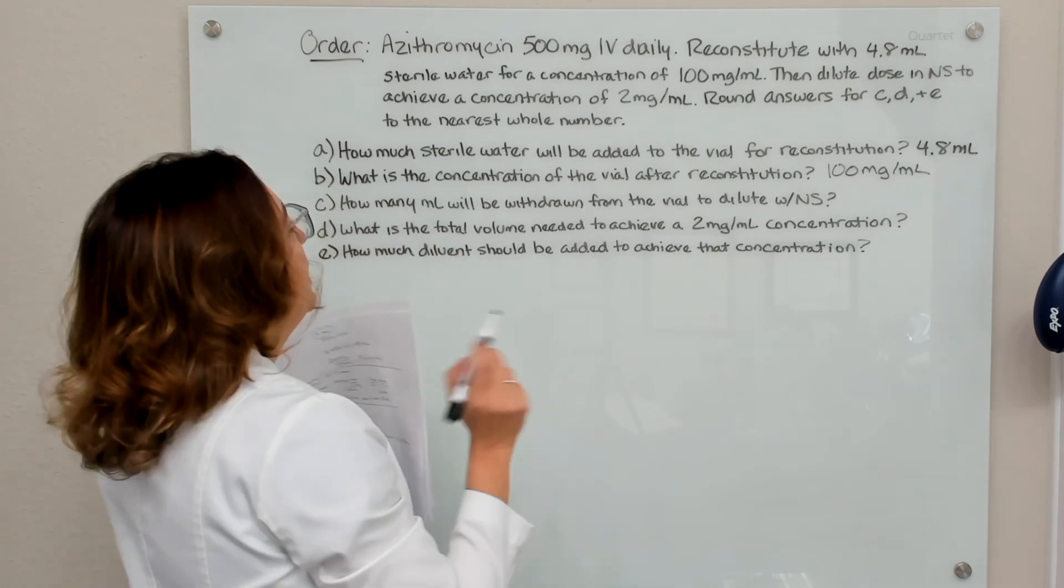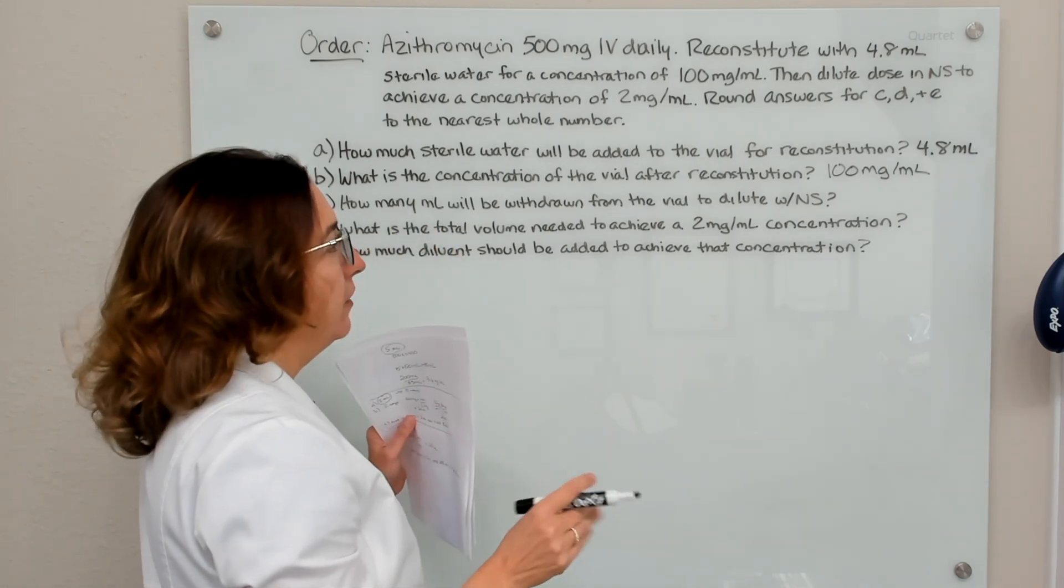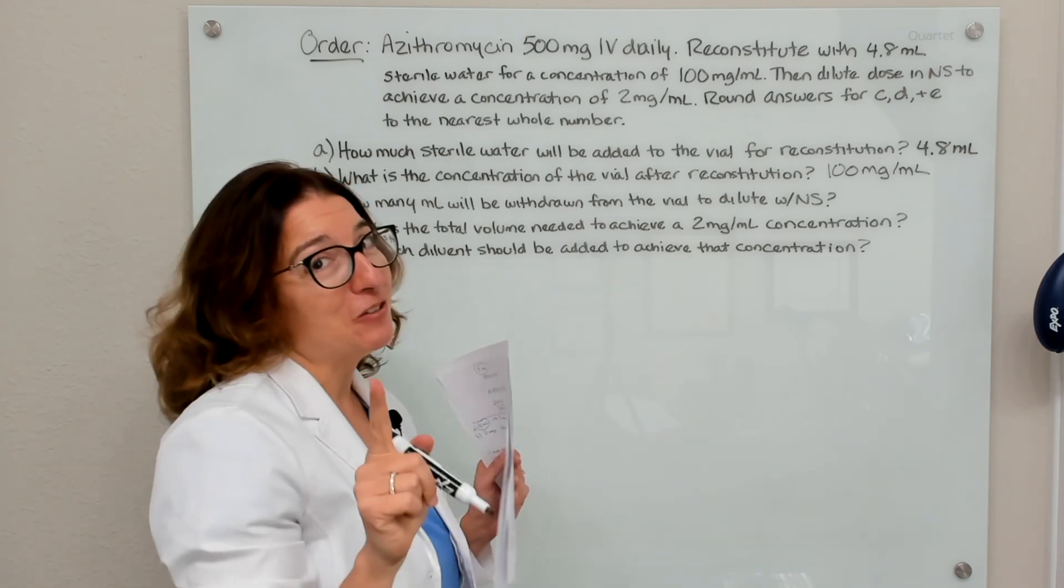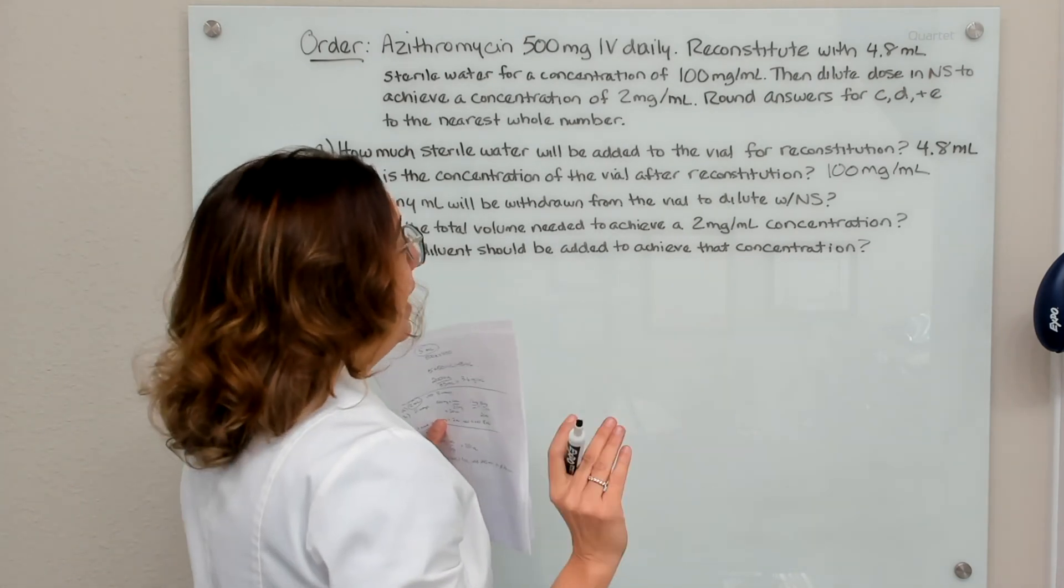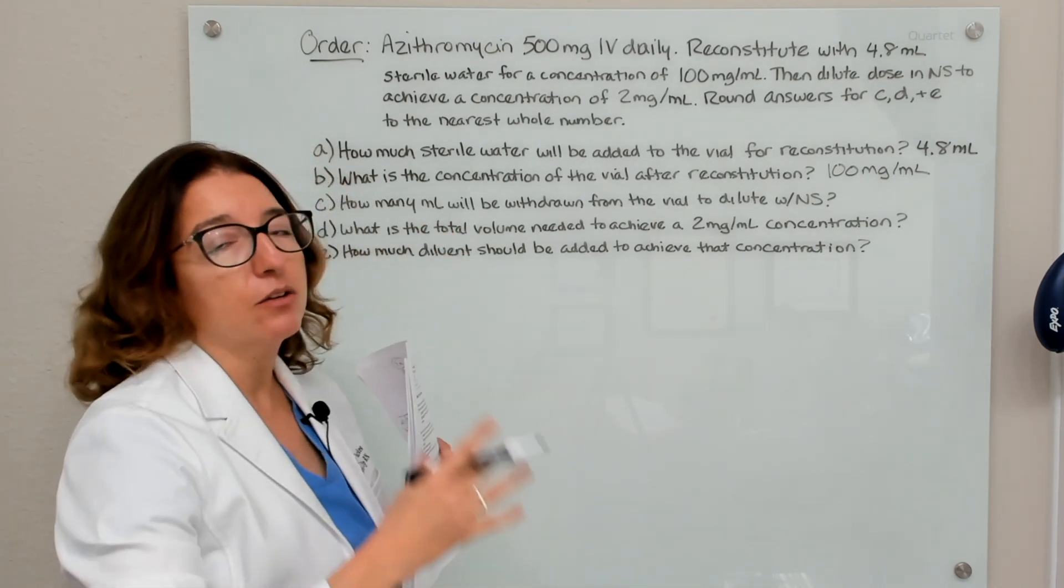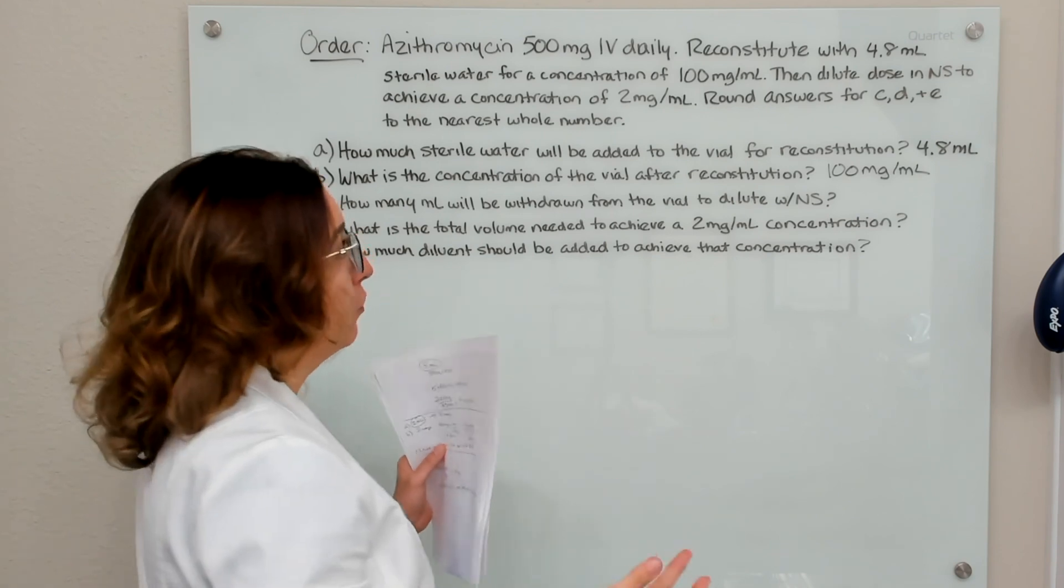C, how many milliliters will be withdrawn from the vial to dilute with normal saline? So we do need to use math for this part. And we can calculate this using dimensional analysis, ratio and proportion, or the formula method.